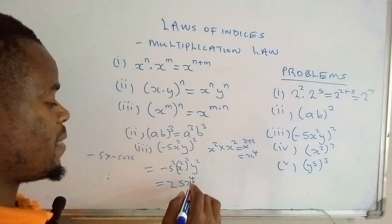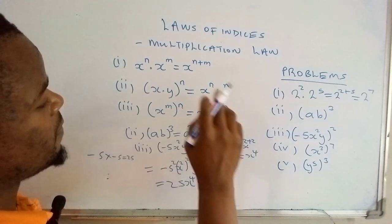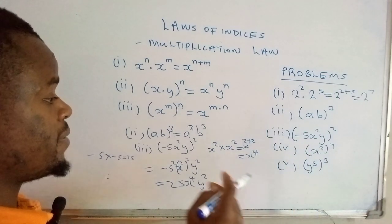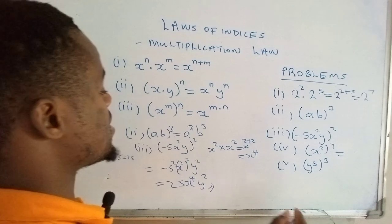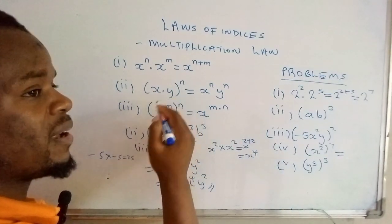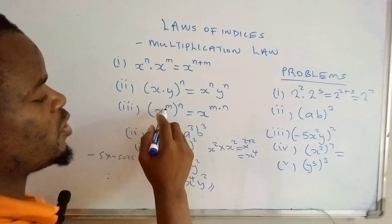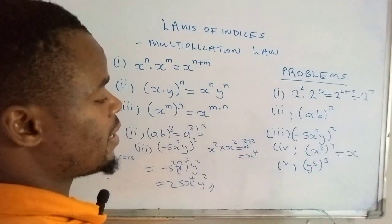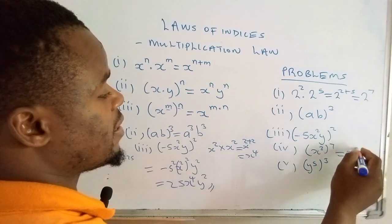Let's move on to the third case. With the third case, when you have a power over another power, what you need to do is simply multiply the powers. You write the base, then multiply 3 times 7, that's 21.